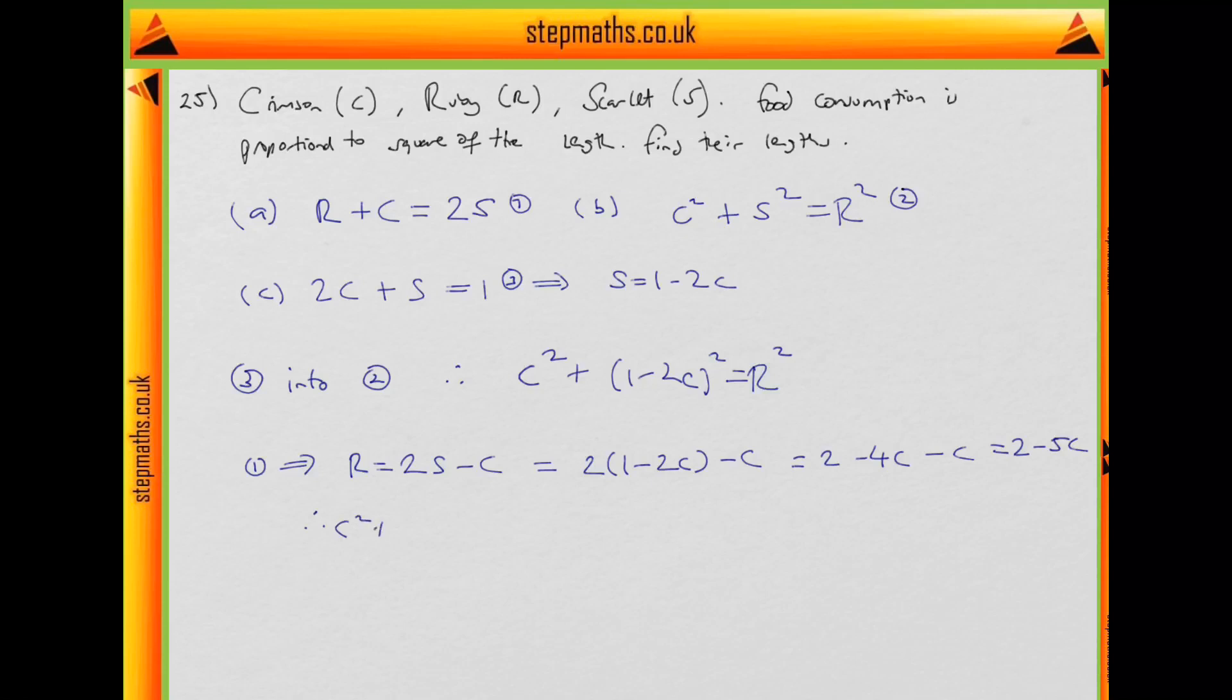So therefore we get C squared plus 1 minus 2C squared equals R squared. So that's 2 minus 5C all squared. Well, therefore C squared plus 1 minus 4C plus 4C squared equals to 4 minus 20C plus 25C squared. And therefore we get 20C squared minus 16C plus 3 equals to 0,